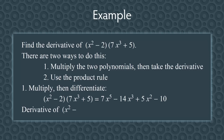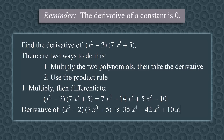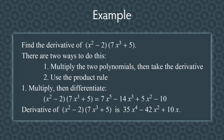Let's now take the derivative of this polynomial, term by term. The derivative of 7x⁵ is 35x⁴. The derivative of −14x³ is −42x². The derivative of 5x² is 10x, and the derivative of −10 is 0. Don't forget the derivative of any constant number is 0. So we get: the derivative of (x² − 2)(7x³ + 5) is 35x⁴ − 42x² + 10x.